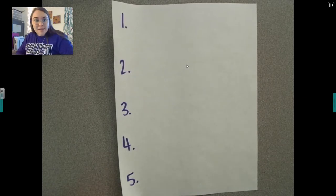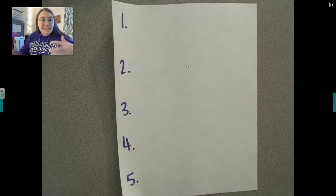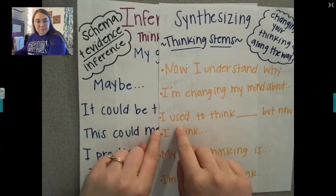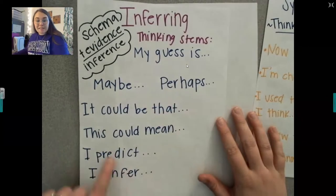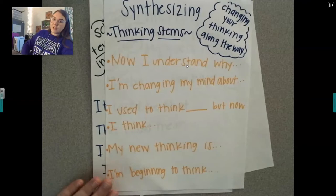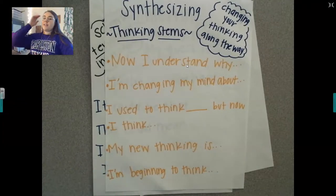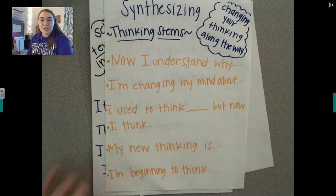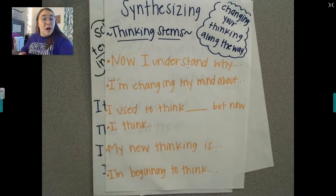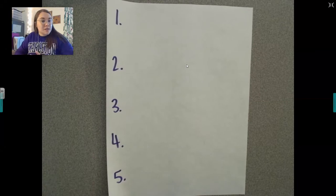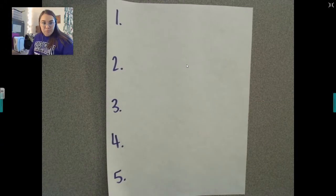I'm going to pause and say, okay, make an inference or synthesize your thinking right now. When you're making an inference, I will put up both anchor charts and I want you to start with one of the thinking stems — maybe, perhaps, my guess is, I predict. And for synthesizing: I'm changing my mind, I think, I'm beginning to think, my mind is changing. You can do either or, as long as you have one of both. You can do four inferences and one synthesize, whatever you want, but you need to try to do both while I'm reading.